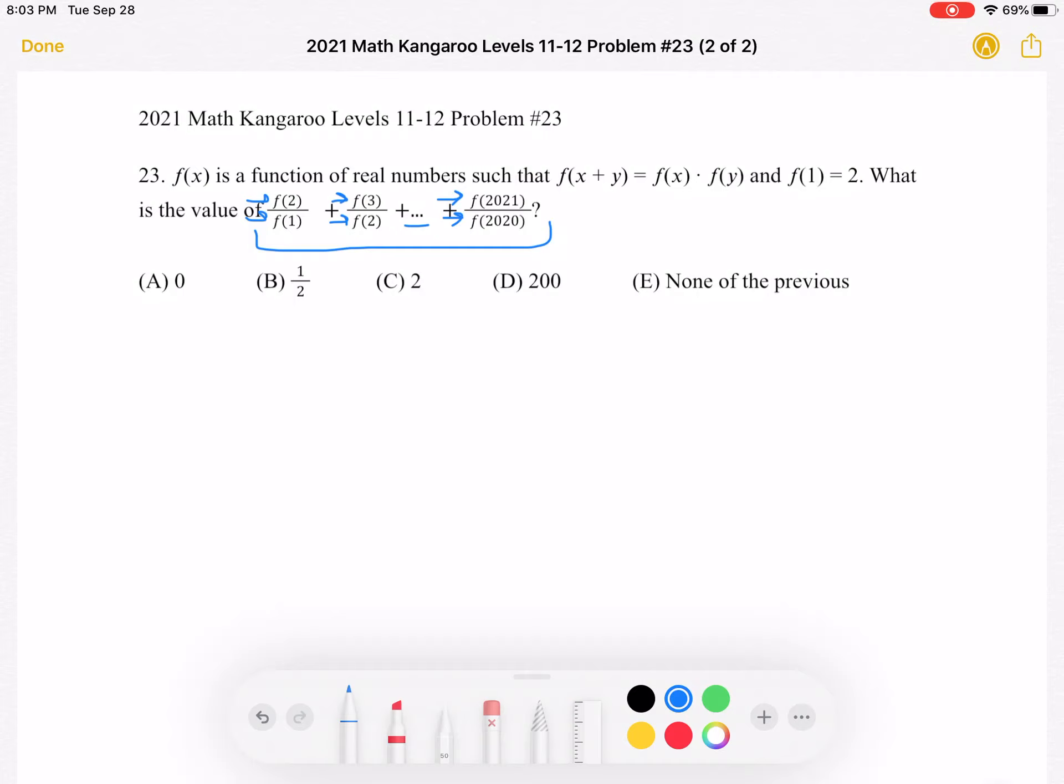So if we were to write a generalized form of each of the terms, we could say that it's in the form of f(x + 1) divided by f(x). So each term can be written as such.